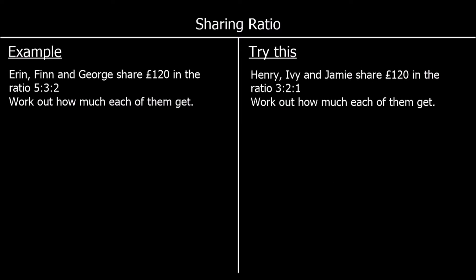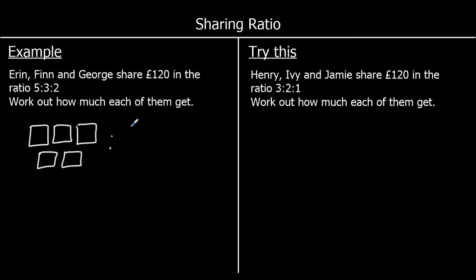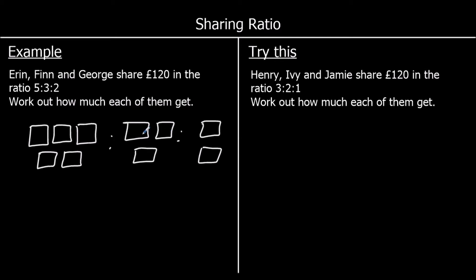Here's another example — this time there are three people, but otherwise it's the same. So Erin, Finn and George share £120 in the ratio 5 to 3 to 2. So Erin gets five parts, Finn gets three, and George gets two. So Erin's going to have five boxes, Finn has three boxes, and George has two boxes. So how many boxes are there in total?